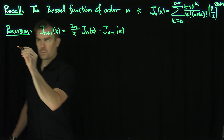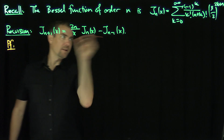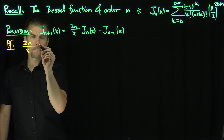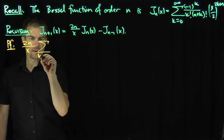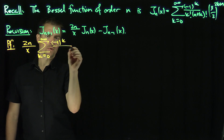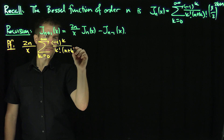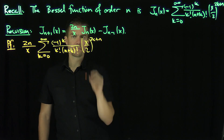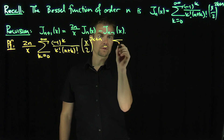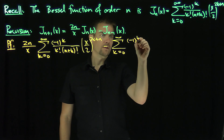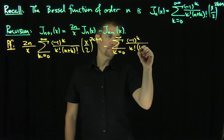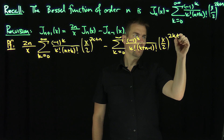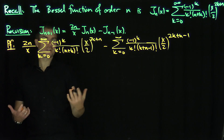We prove as follows. We're going to look at the left-hand side. So (2n/x) J_n is going to be the sum, k from 0 to infinity, of (-1)^k over k! (n+k)! times (x/2)^(2k+n). From this, I'm going to subtract off J_{n-1}, which is the sum k from 0 to infinity of (-1)^k over k! (n+k-1)! times (x/2)^(2k+n-1). That's just using the definitions of these Bessel functions.